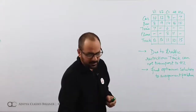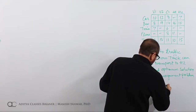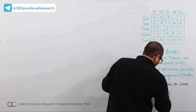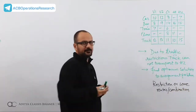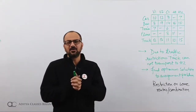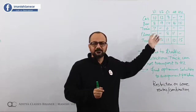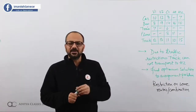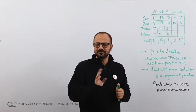Today we are taking a problem where there is a restriction on some routes — or combinations where certain combinations are not permitted. These restrictions could be permanent or temporary in nature. To deal with these restrictions, you can put a dash, an infinity symbol, or a very large value M in the cells where there is a restriction.